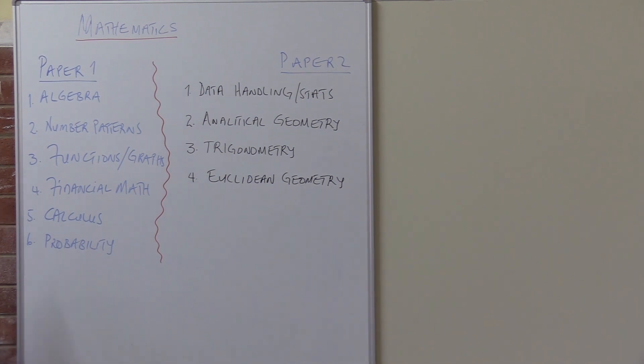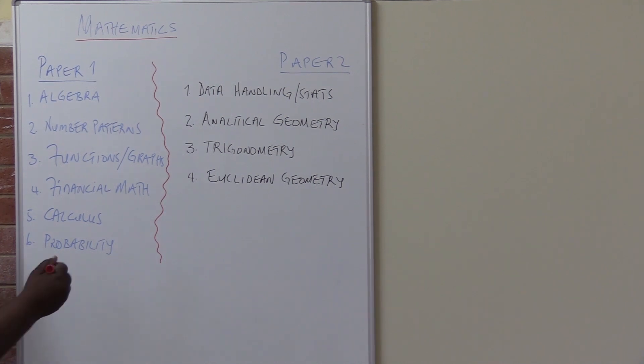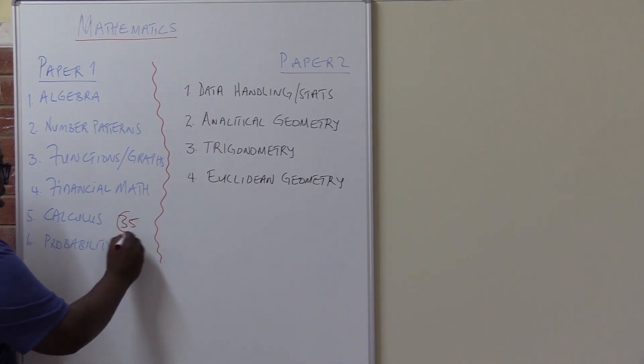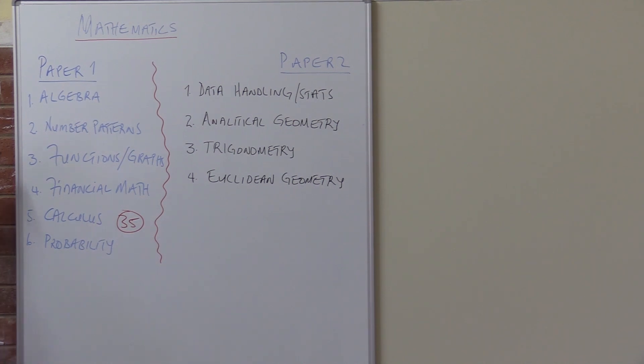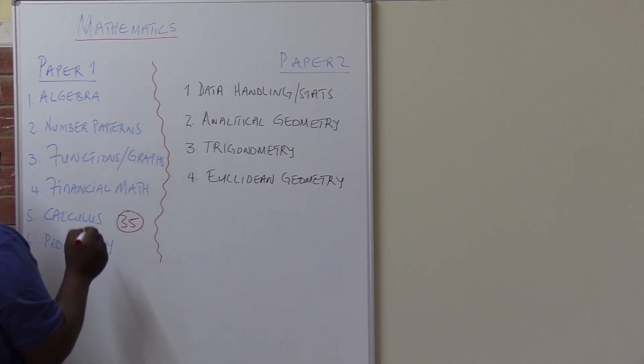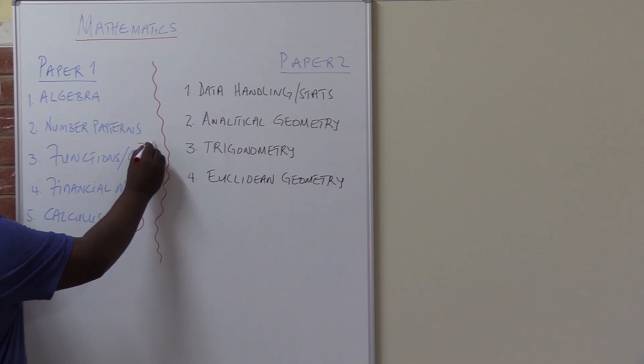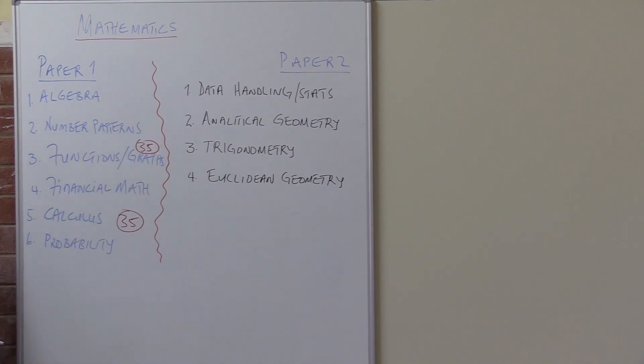In terms of marks, the topic that has got the biggest marks in this section will be, of course, your calculus with about 35 marks at the end of this year. As well as your financial maths also carries the same weight as your calculus, which is about 35 marks. Together, it's about 70 marks already.